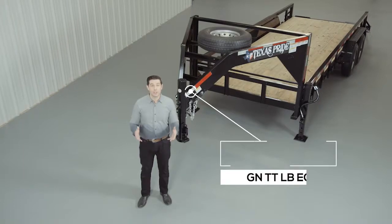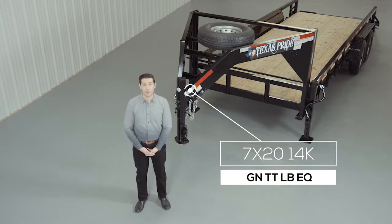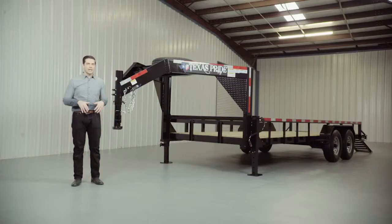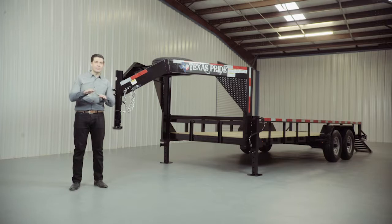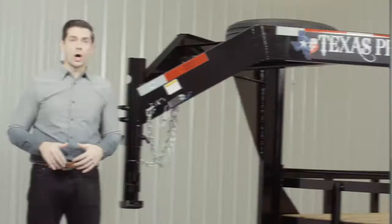Today we're going to do a walk around of our Texas Pride 7x20 foot gooseneck 14,000 pound lowboy equipment trailer. A lowboy style trailer simply means the deck is down in between the wheels for a lower ride height. Our lowboy equipment trailers are available in lengths from 14 feet all the way up to 30 feet.